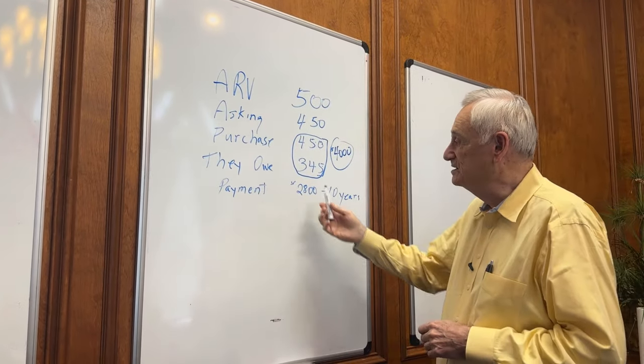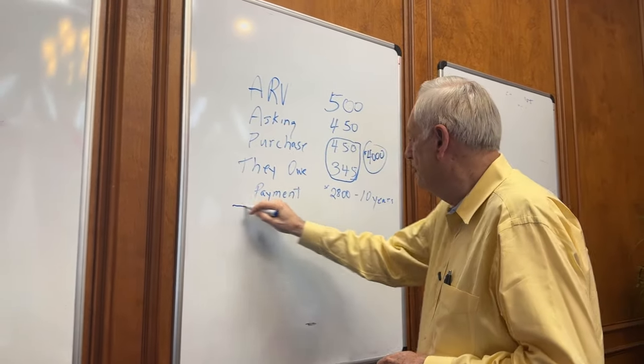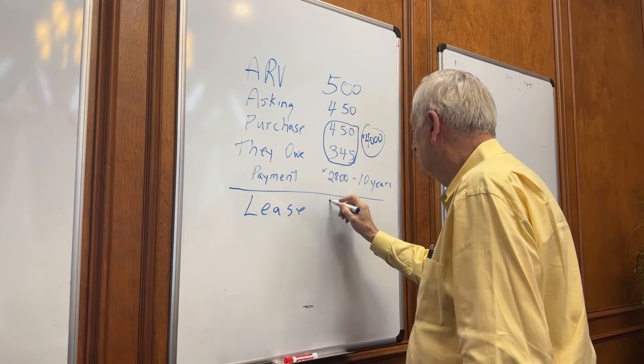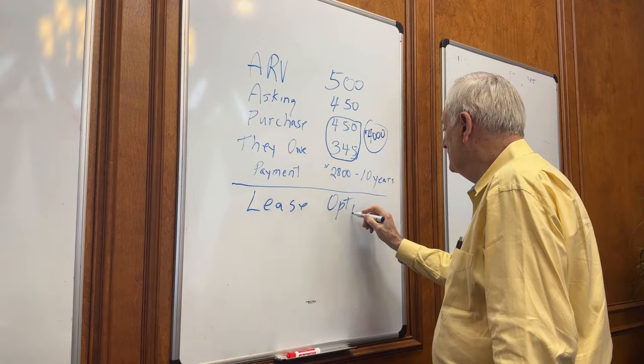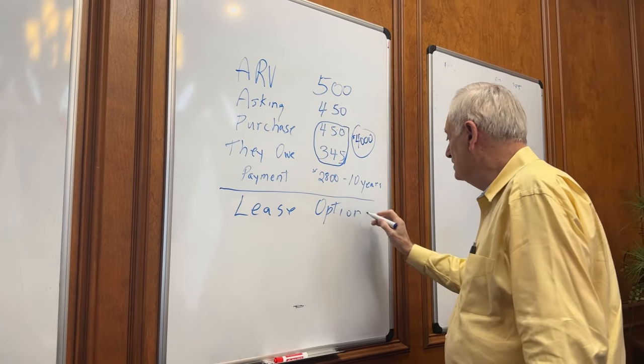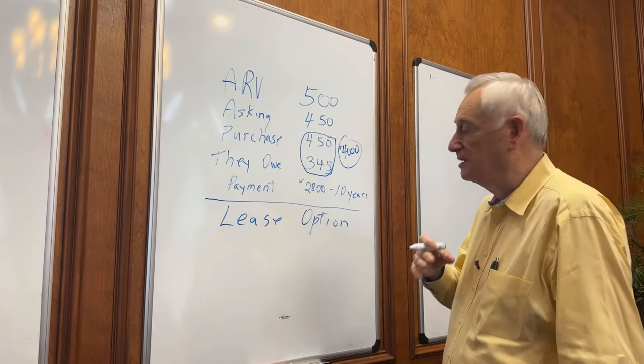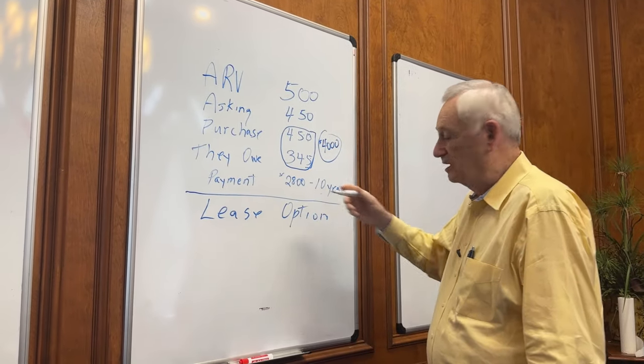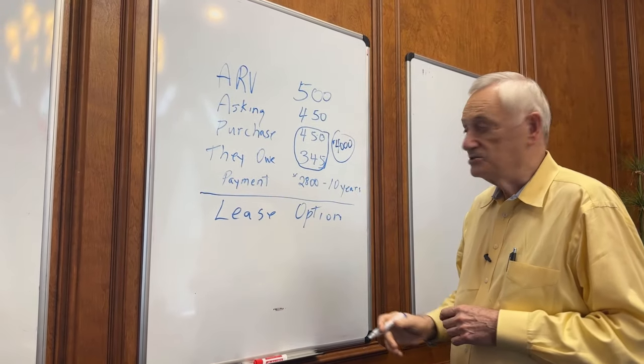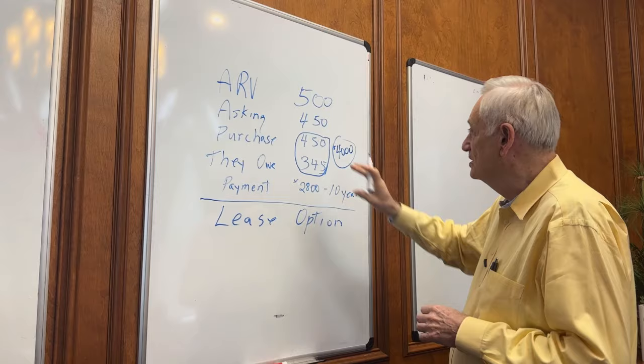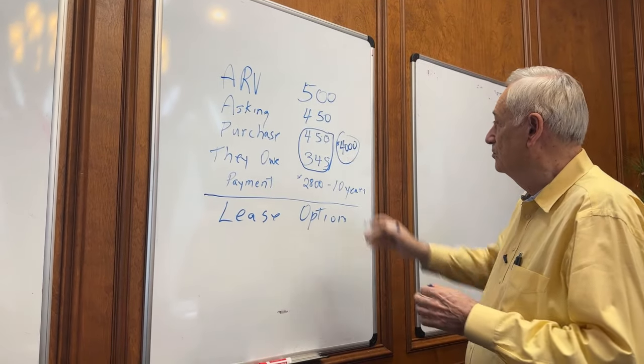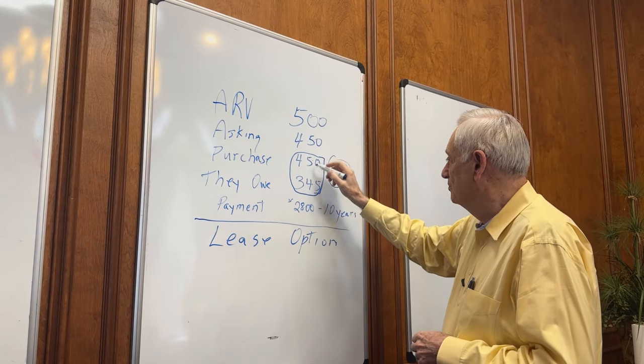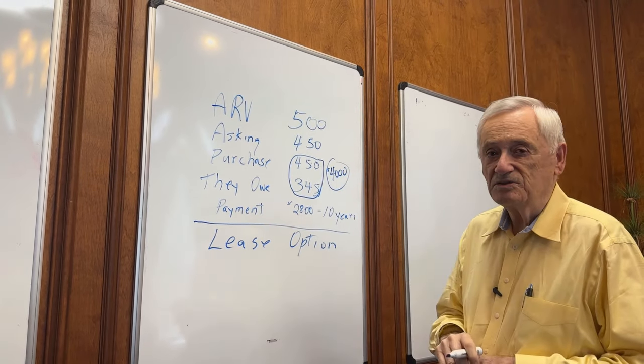Another thing you can do is you can lease option the house. That means I'm not buying the house, I'm leasing it with the right to buy it any time during this 10-year term that I want to buy it. That also gives me the right to sell it. So any time during that 10 years, I can sell the property for whatever it's worth or whatever I sell it for at that time and keep the difference between that and what's left of the $450,000 that I owe the seller.